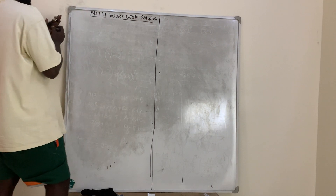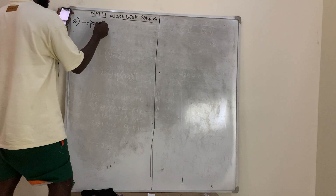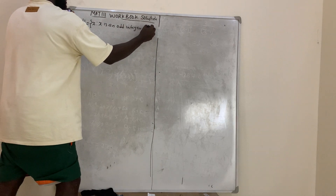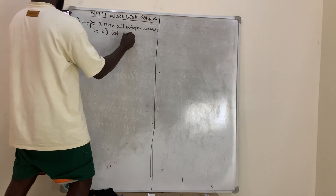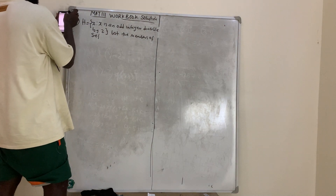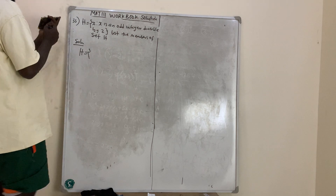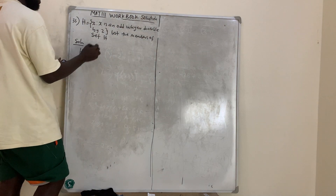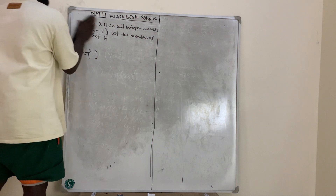Question number 33: H is the set of x such that x is an odd integer divisible by 2. List the members of set H. Solution: There is no odd integer that is divisible by 2 — every odd number is not divisible by 2. So the answer is an empty set; H is just an empty set.